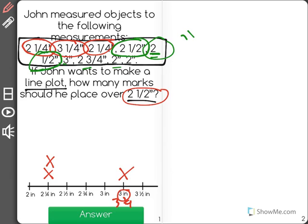And the rest of them don't show 2 and a half so I circled 2 in green. That means that it should have two marks at 2 and 1 half.